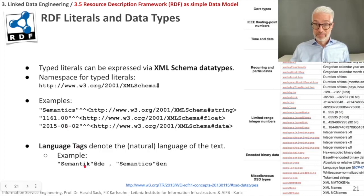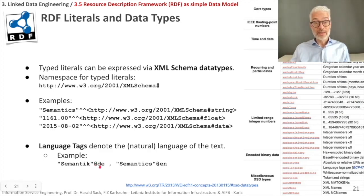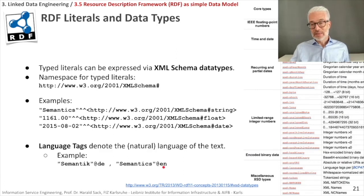Another option is to denote the natural language of a text string. You do this with the ampersand symbol followed by a two-letter ISO language code. For example, "Semantik" with @DE stands for German, "semantics" with @EN stands for English, @FR would stand for French, and @IT would stand for Italian. This makes clear what natural language a given string comes from.